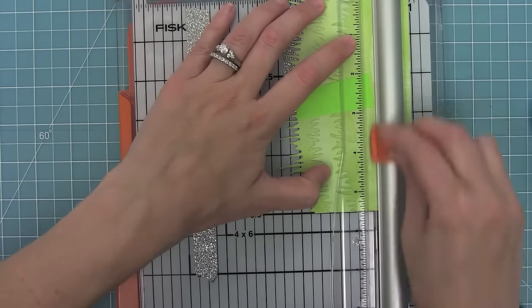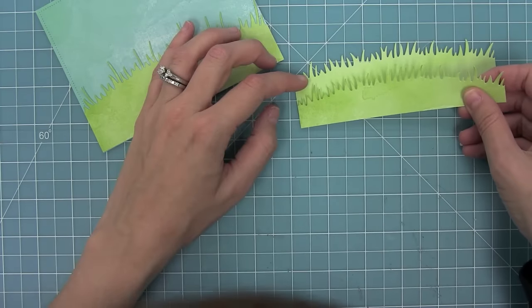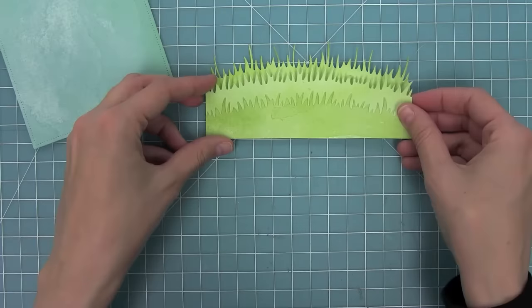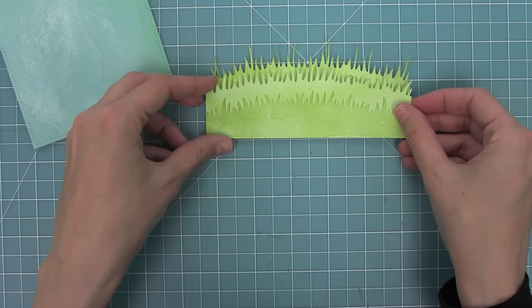I'm holding those all in place how I want them and then I'm going to trim off the bottom that way they're all the right size. I'm going to layer the pieces with both tape runner and foam tape to give a ton of dimension to the card.